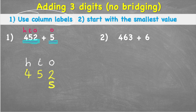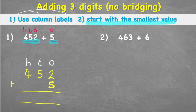Now I can put my equals line and my addition sign to remember that I'm adding. I can look at step two: start with the smallest value. The smallest value is our ones — ones are smaller than tens, which are smaller than hundreds. So I'm going to add 2 and 5.